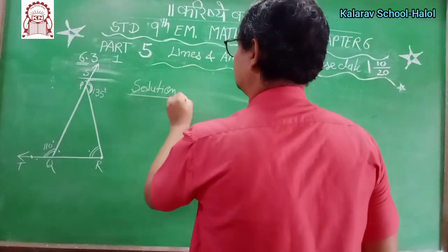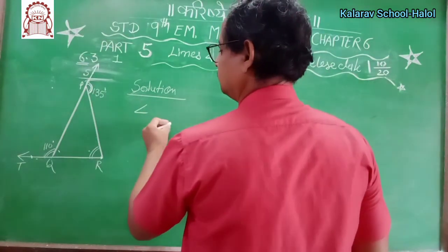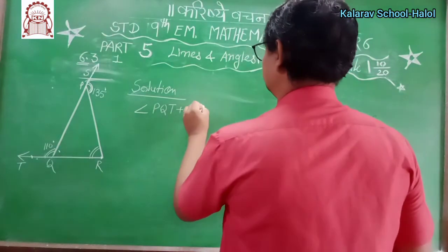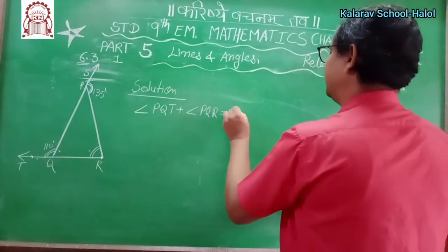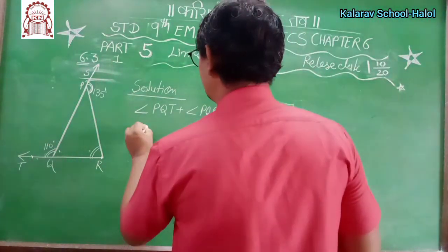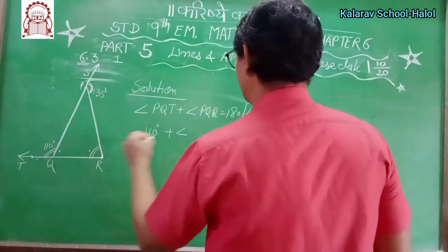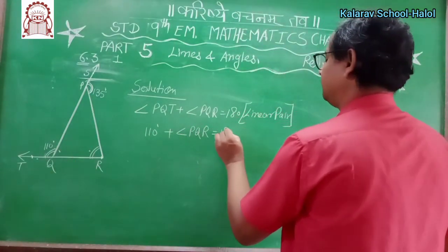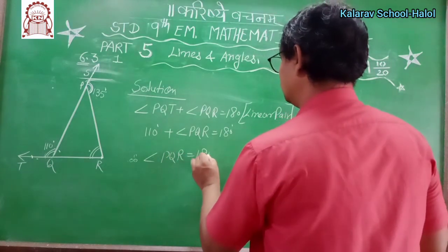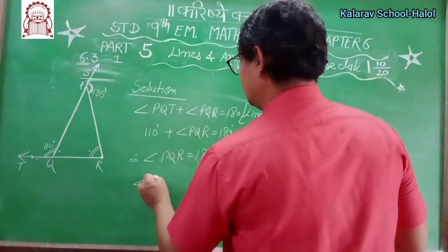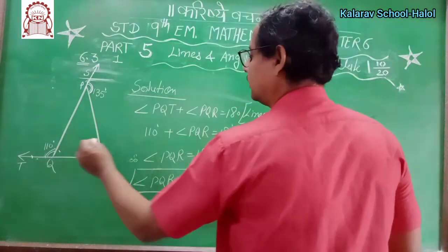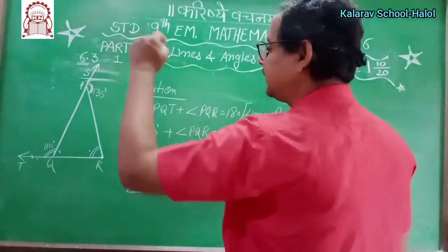Solution. Angle PQT plus angle PQR equals 180 degrees — linear pair. PQT is 110 degrees, so 110 plus angle PQR equals 180. Therefore angle PQR equals 180 minus 110, which equals 70 degrees. You got that this angle is 70 degrees.